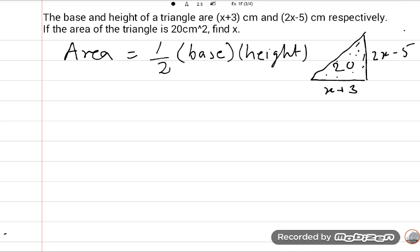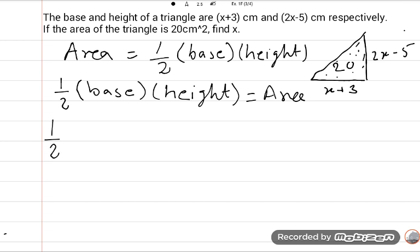Now I put the values in the formula. I'll write the formula because I want an easy way to find the value of x. Half, 1 upon 2, what is base? x plus 3. What is height? 2x minus 5 is equal to 20.